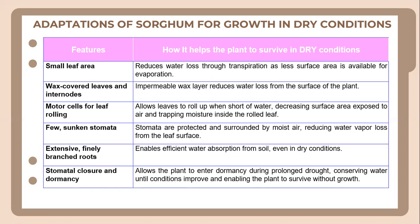Sorghum also has sunken stomata, which are protected and surrounded by moist air, reducing water vapor loss from the leaf surface. Furthermore, it has extensive, finely branched roots, which enable efficient water absorption from soil even in dry conditions. Finally, sorghum has stomata closure and dormancy mechanisms, which allow the plant to enter dormancy during prolonged drought, conserving water until conditions improve and enabling the plant to survive without growth.